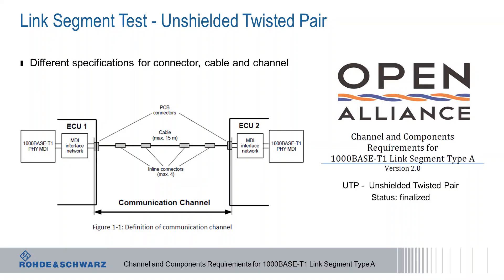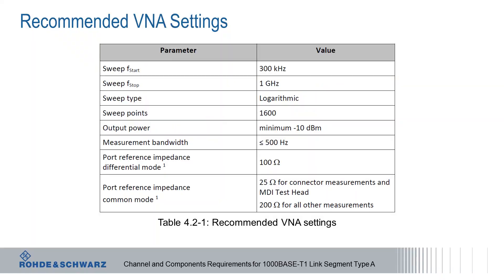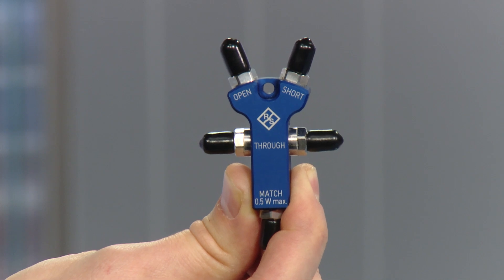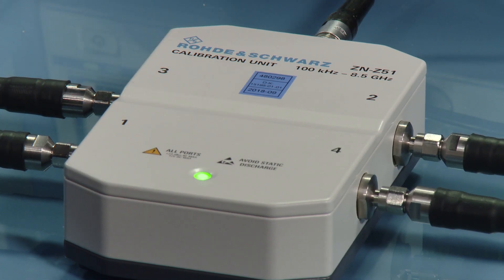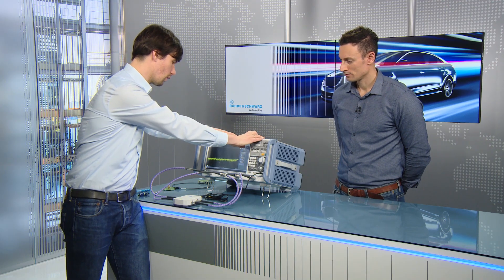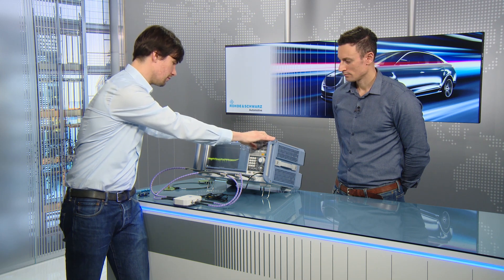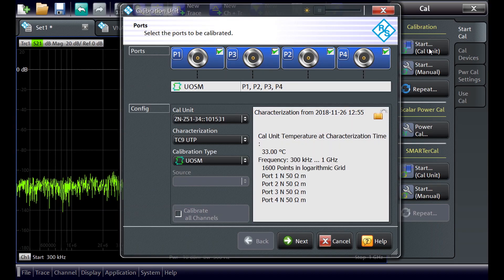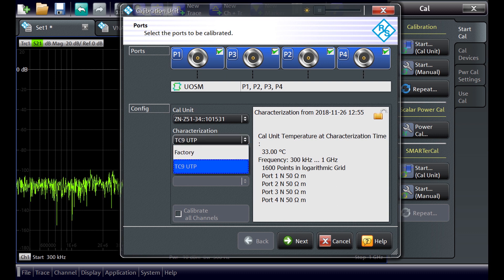Let's have a look quickly at the TC9 test setup specifications. The first thing we have to do is to calibrate the instrument. We start with the calibration using the settings from the spec, and we can use either a manual calibration kit or an automatic calibration unit. If we use the automatic calibration unit, we press CAL and then start calibration. We have to choose the TC9 UTP characterisation from the characterisation menu.